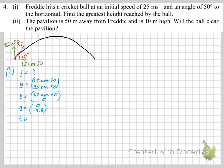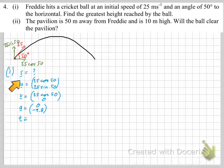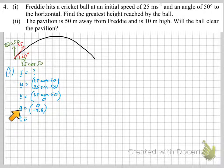S we want to know. Now remember, in 2D there's no SUVAT equation that just links S, U, V, and A — you have to go via T. So we need to know what T is. Keep it simple to begin with: V equals U plus AT.